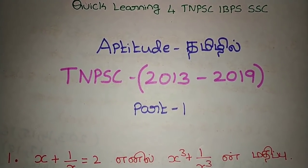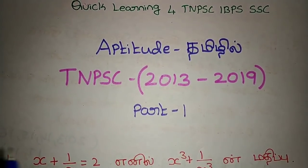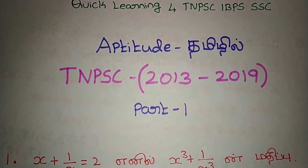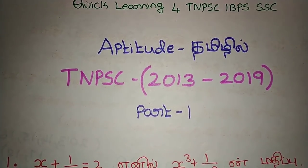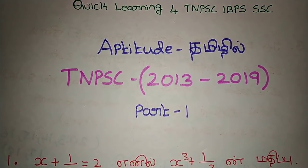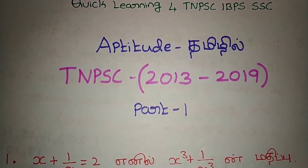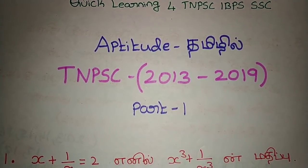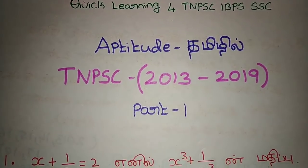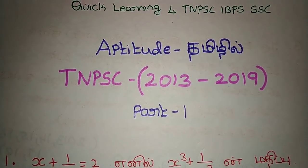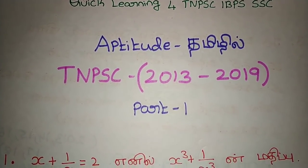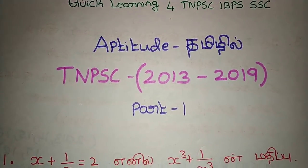If you look at the previous year, it is a minimum of 25 questions. You will have a minimum of 25 questions. My channel is in English. We will have a minimum of 25 points. The exam is a minimum of 25 points. Now we will go to Tamil Nadu.